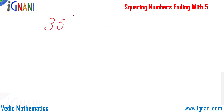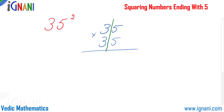Let us find the square of 35, which is 35 into 35. Start by separating the digit 5 on the right-hand side from the rest. In our case, other than 5 there is only 3. First, multiply 5 into 5, which gives 25. Then take 3 and add 1 to get 4, so 3 into 4 equals 12. Prefixing 12 to 25, the result is 1225.